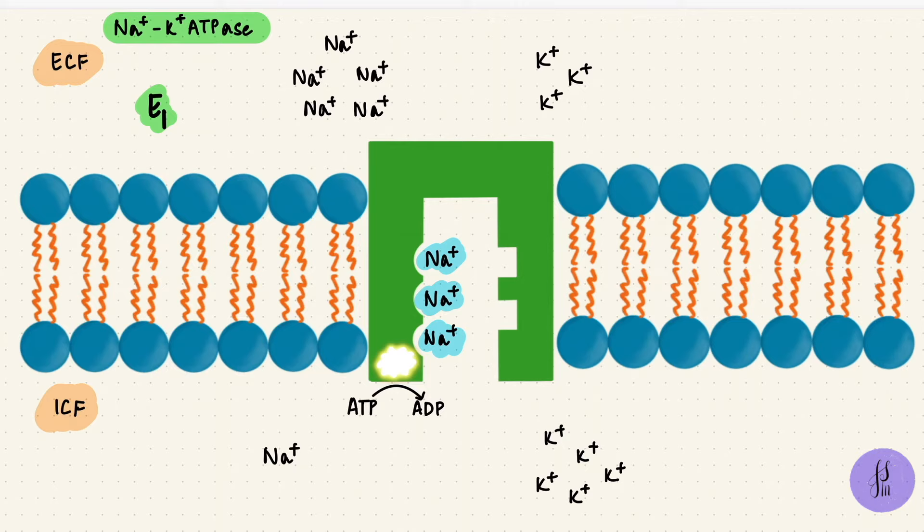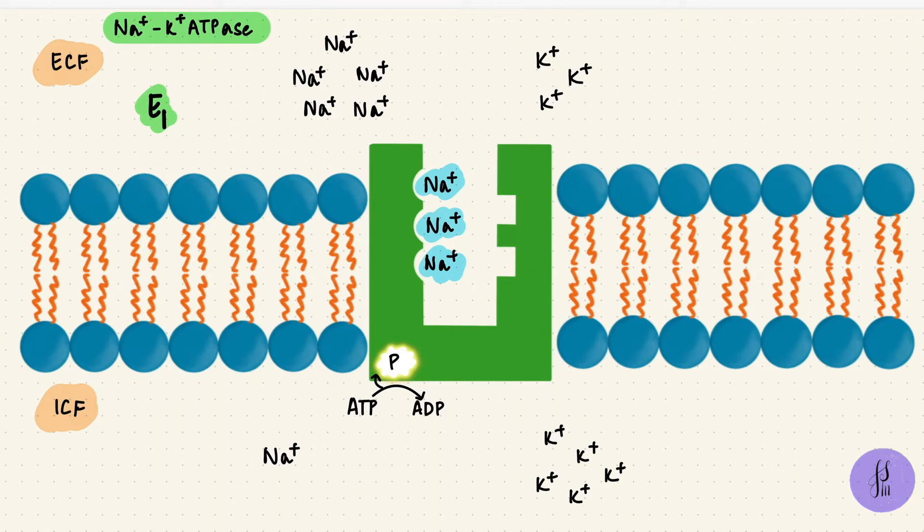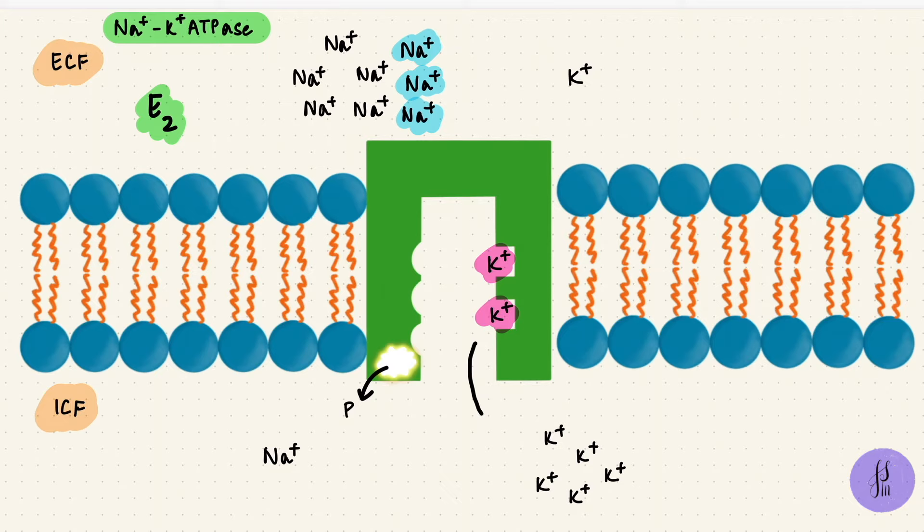ATP by the ATPase undergoes hydrolysis, the phosphate gets transferred to the carrier, phosphorylation changes the conformation, and now the binding sites face extracellularly. The E2 position, where sodium ions get released, potassium binds because of the higher affinity. There's dephosphorylation, and the conformation changes again, so now potassium can enter the cell.